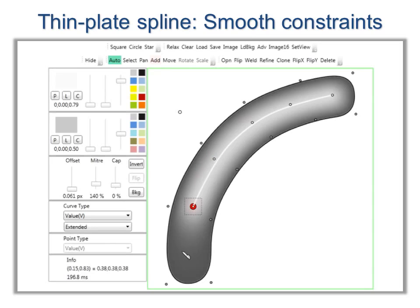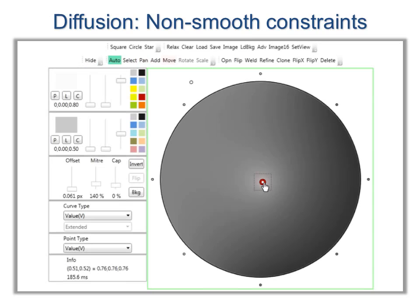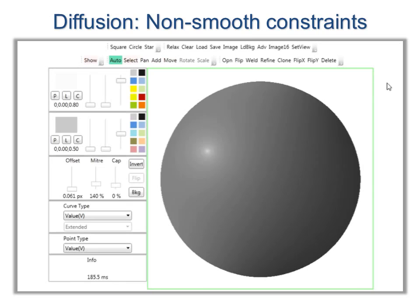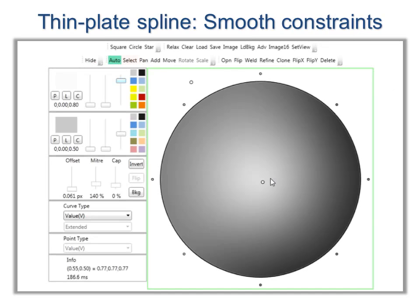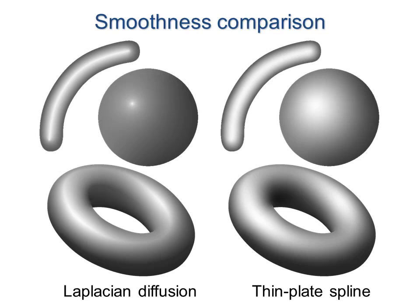We adapt thin-plate splines to allow smooth interpolation of constraints. Note how diffusion from a point constraint creates a tent-like reconstruction, whereas the thin-plate spline interpolates smoothly. Here is a side-by-side comparison.